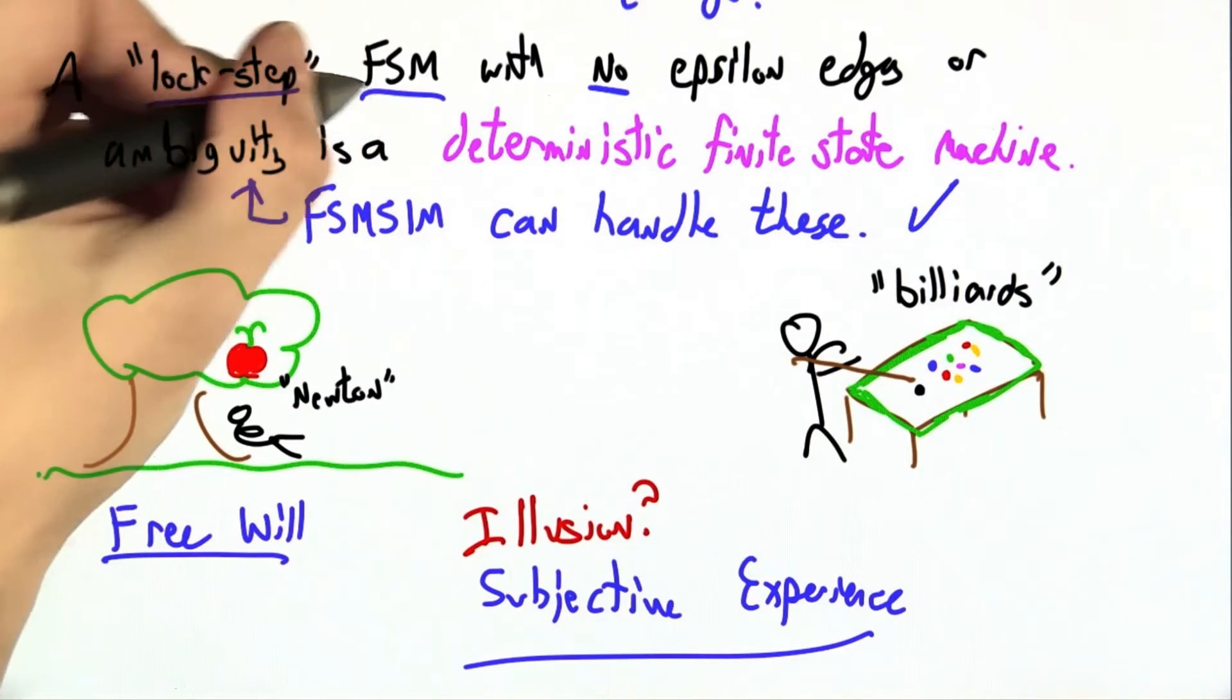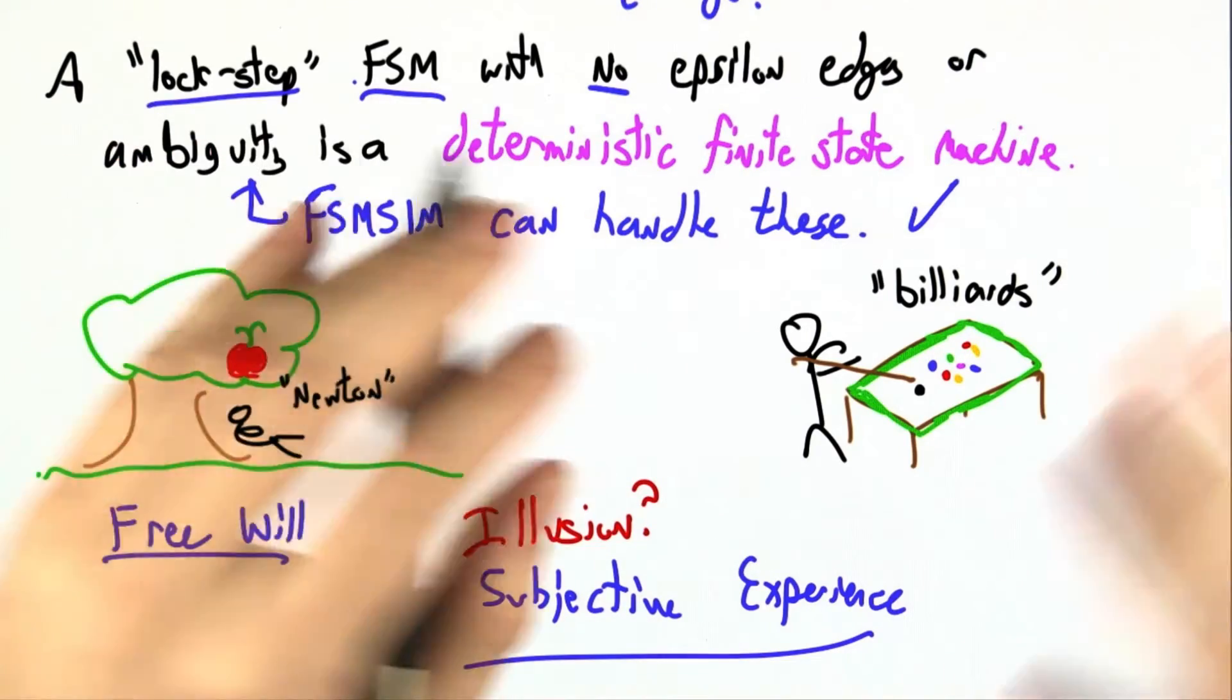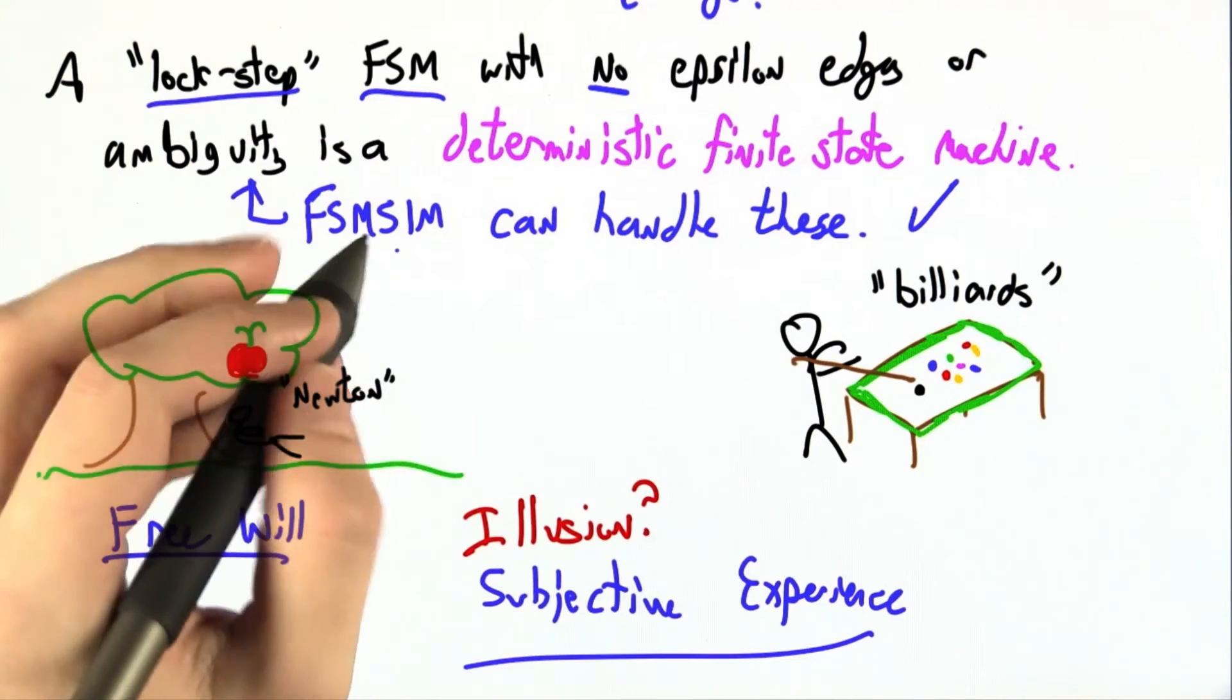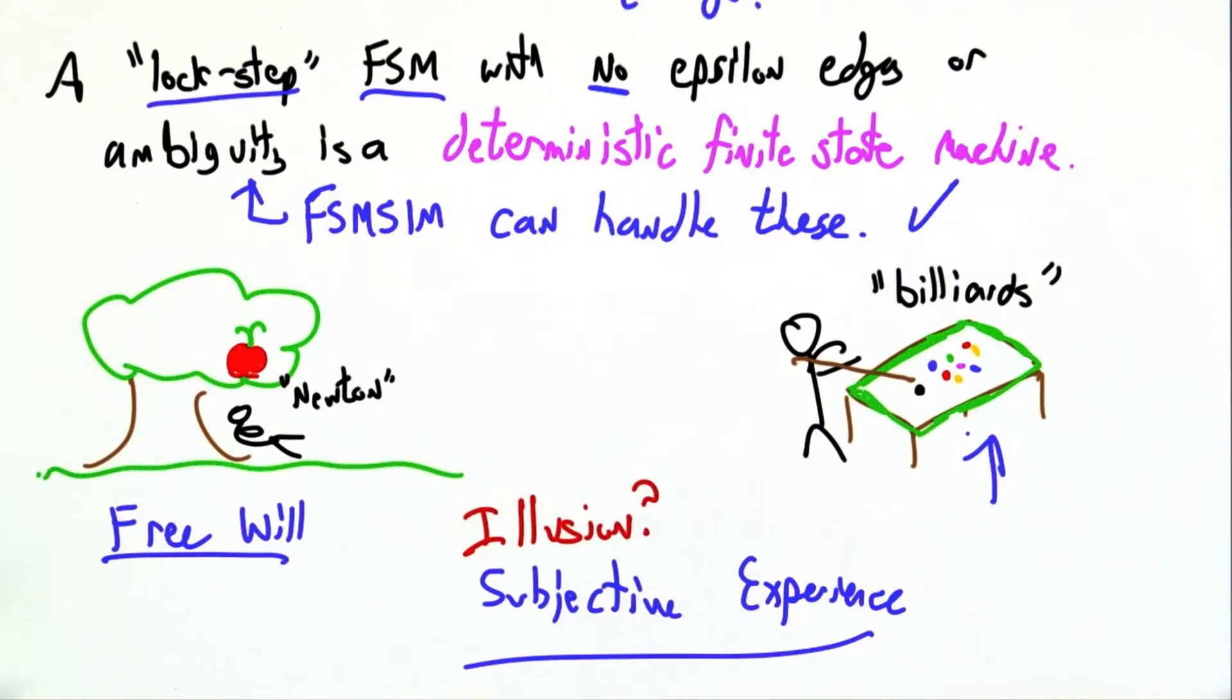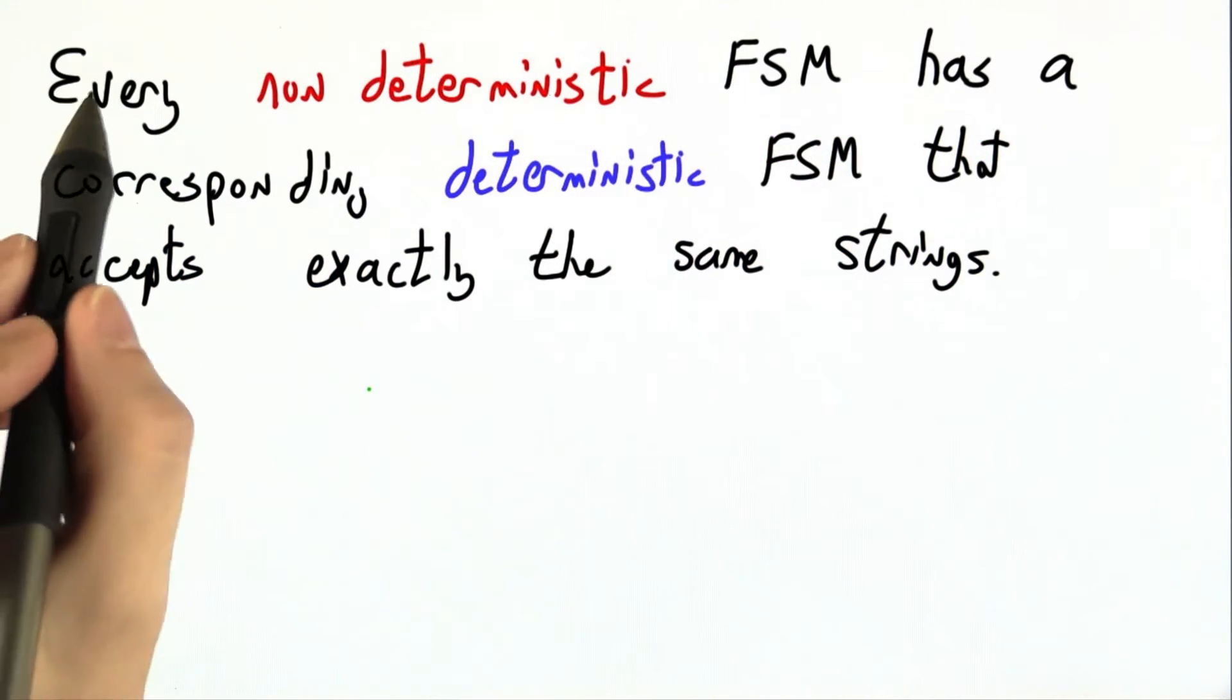We're going to see that something similar holds for finite state machines. Although non-deterministic finite state machines look like they have much more power and much more freedom, anything that could be done with them could also be done in our deterministic billiard ball world. In fact, you can watch me suck free will out of this world right now.